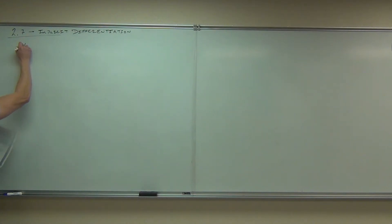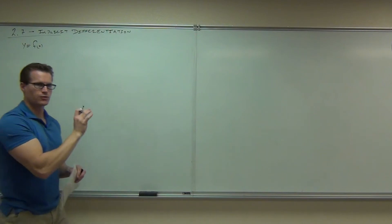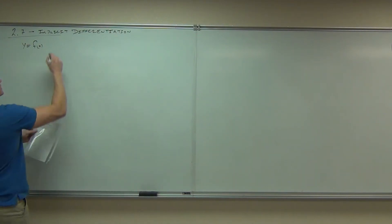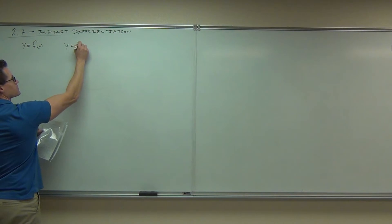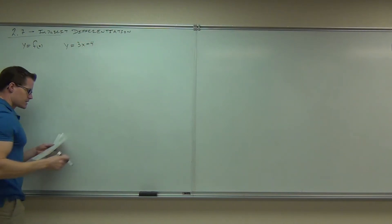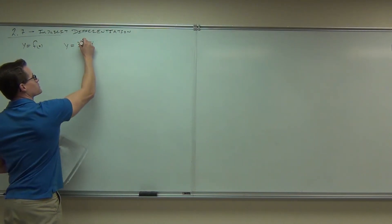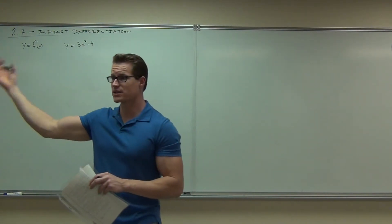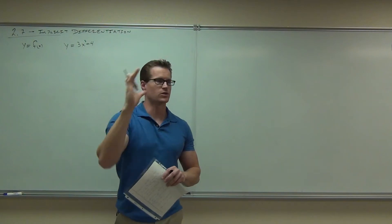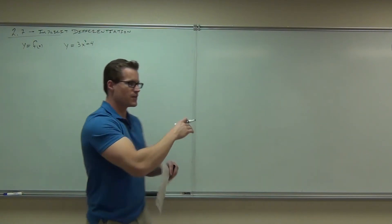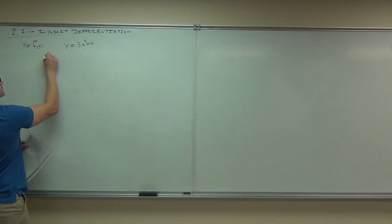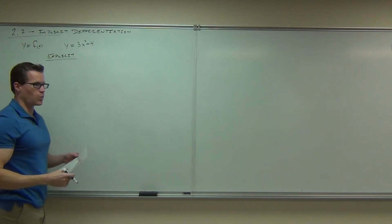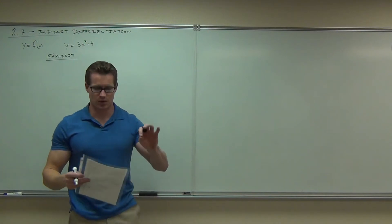This right here, when you have y equals a function in terms of x, where you have one y, it's solved for, equals some function in x, such as y equals 3x plus 4, or maybe even 3x squared plus 4, is an explicit form of a function. Explicit means y is over here, your x's are over here. You can solve for y. This is explicit, means y is given explicitly, tells you exactly what y is.